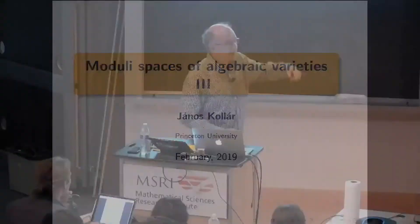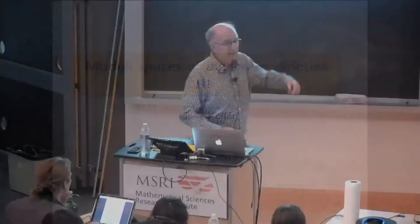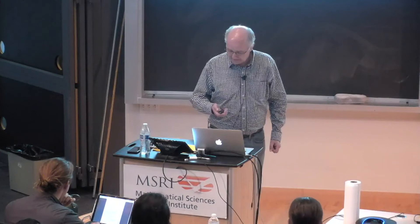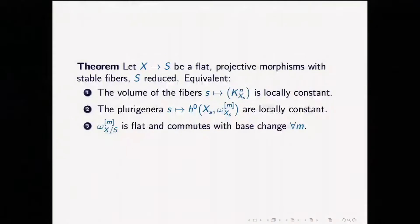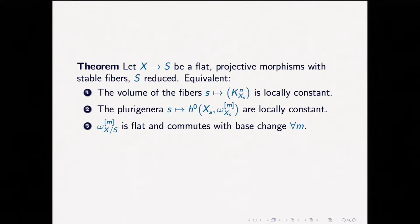It seems I'm trying a new system where the three central screens show different slides. They are supposed to follow some order, but I think this is the main one. We had this theorem that if there is a flat projective morphism with stable fibers that's reduced — in the curve case this is exactly what we want in a moduli theory — but in higher dimensions this is not true.